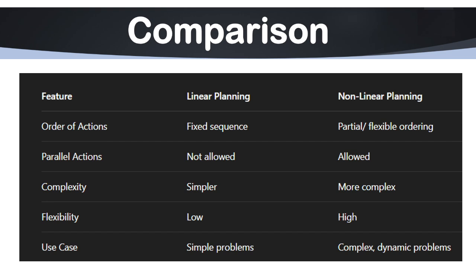Now let's compare these two different methods. First is linear planning, another is non-linear. The order of action here is fixed sequence. It always follows a sequence. In non-linear planning, it is partial and flexible ordering.